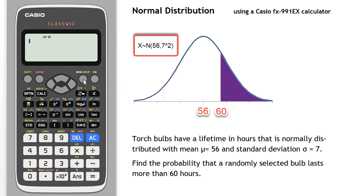First from the menu we select number seven, distributions, and then we want number two, the normal cumulative distribution.